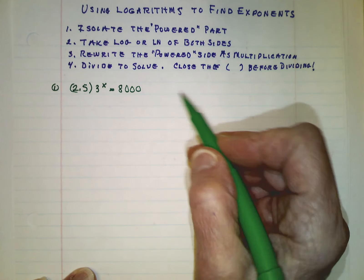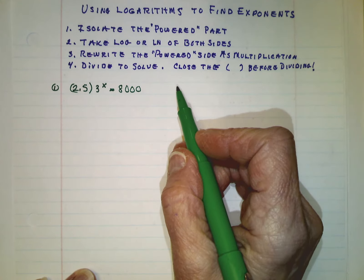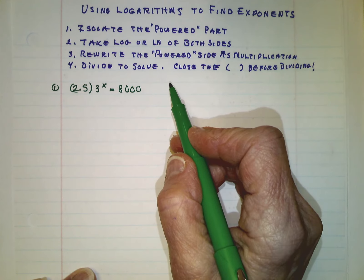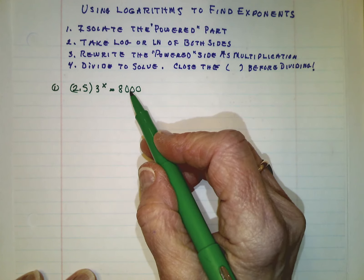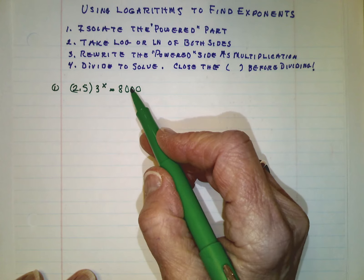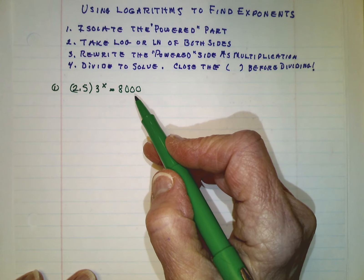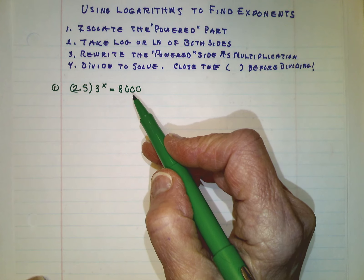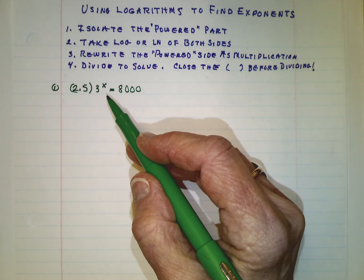Earlier in this unit, we solved for a missing exponent by putting both sides of the equation into powers of the same base. We've got the same base on this side, the same base on that side. Well, that's going to be really hard to do with this problem.